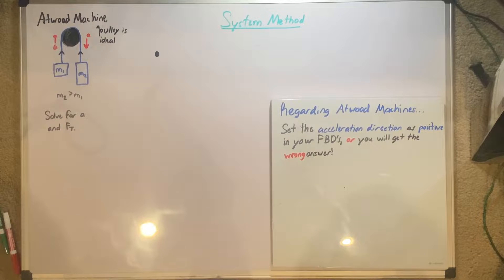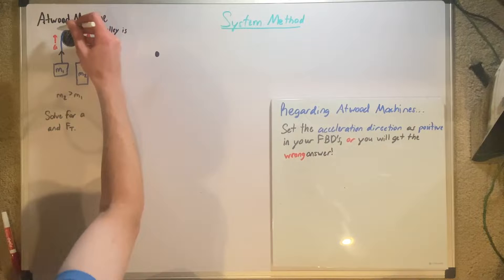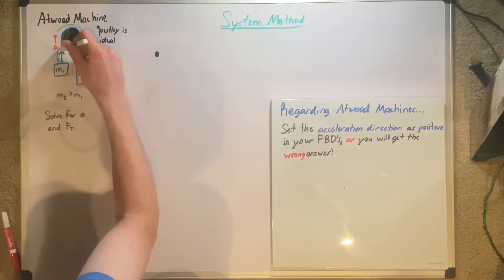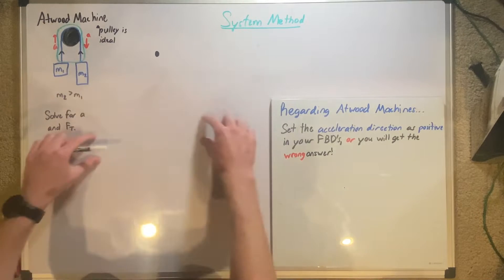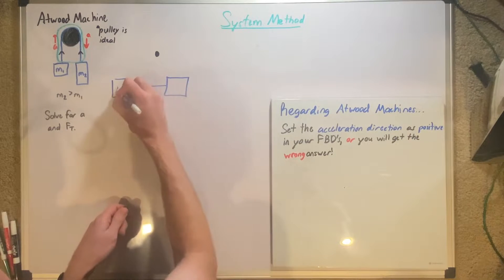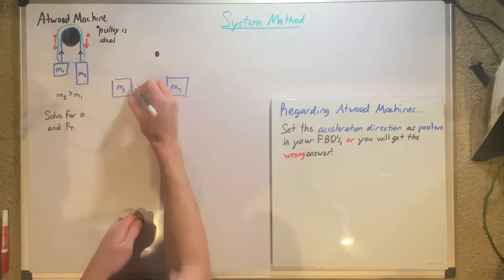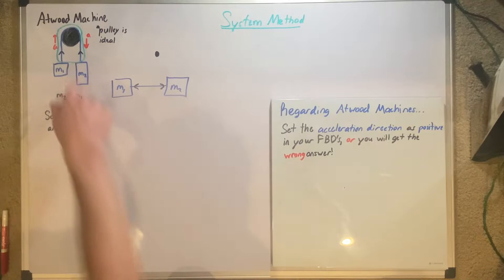Take a second to pause the video and think where our forces for the system would be. Our forces for the system would be just the external forces. Because if we had this same exact thing but sideways, where there wasn't a pulley, your system would look like just an M1 and an M2 attached by a rope in the middle — as if we took it off the pulley and spread it out on the floor. The tension force going one way and the other way are equal and cancel out.